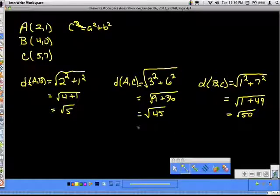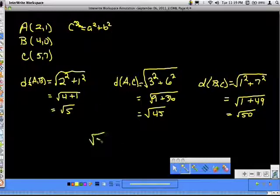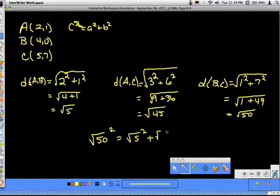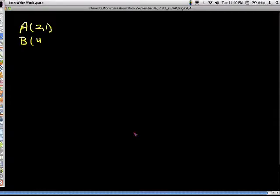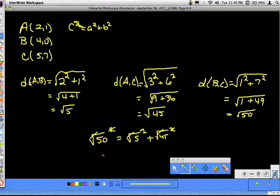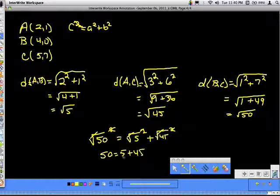So what I need to do is find something squared equals the sum of the other two squares. So in this case, I can actually do square root of 50 squared equals square root of 5 squared plus square root of 45 squared. Because, remember, inverse operations, squares and square roots are going to cancel each other. So I'm left with 50 equals 5 plus 45, which obviously is true.